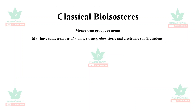Another important factor in lead optimization is identifying which groups can be substituted to increase the drug-likeness properties of a lead molecule. These are called bioisosteres. Bioisosteres replace existing groups while retaining biological activity, reducing toxicity, and improving kinetic properties.